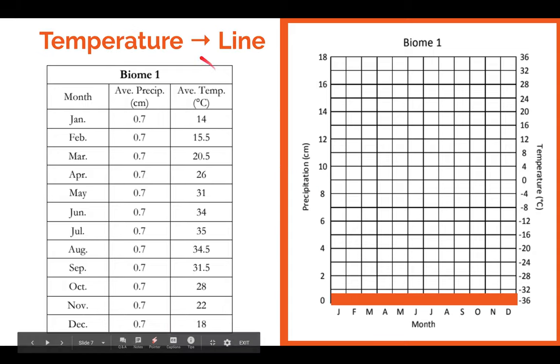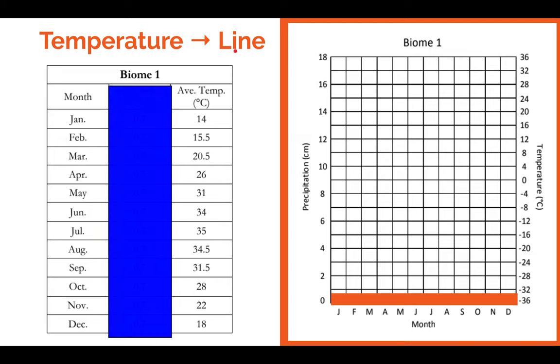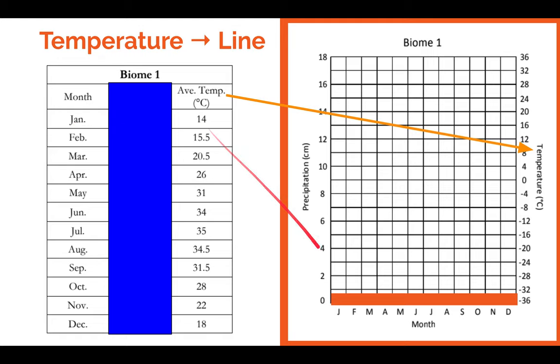Moving on to temperature. Temperature is a line graph. So we're not going to worry about precipitation here. Temperature is on the right here, given in Celsius. So what we're going to do is our average temperature in January is 14. January is here. We're just going to place a dot at 14.